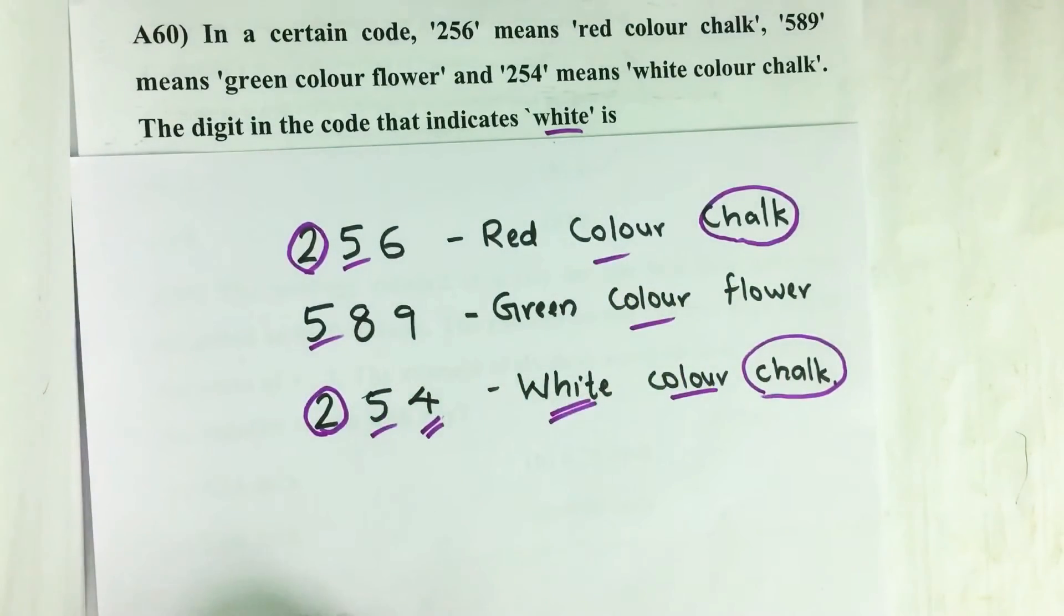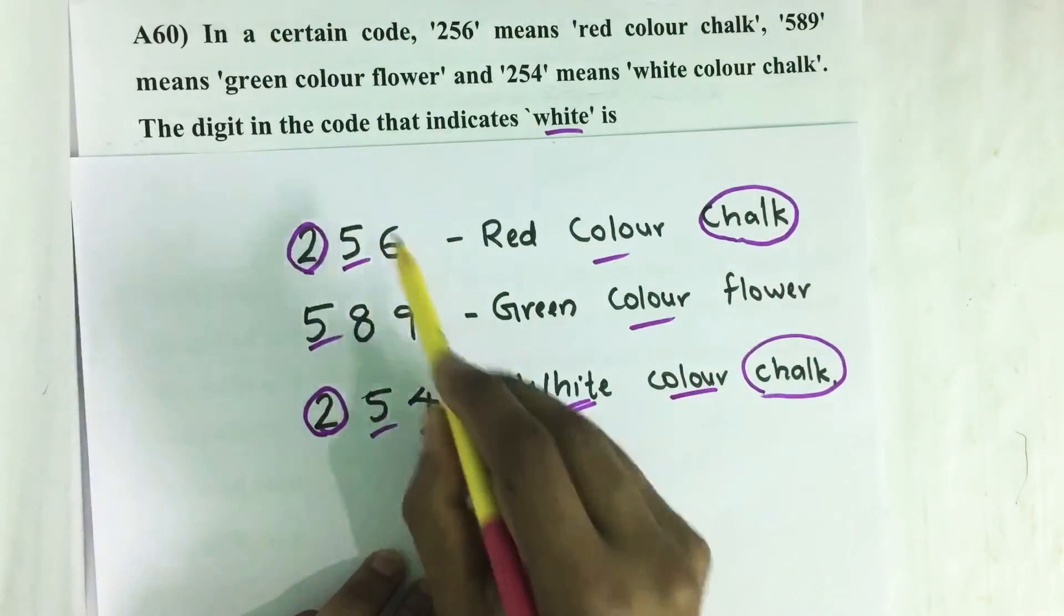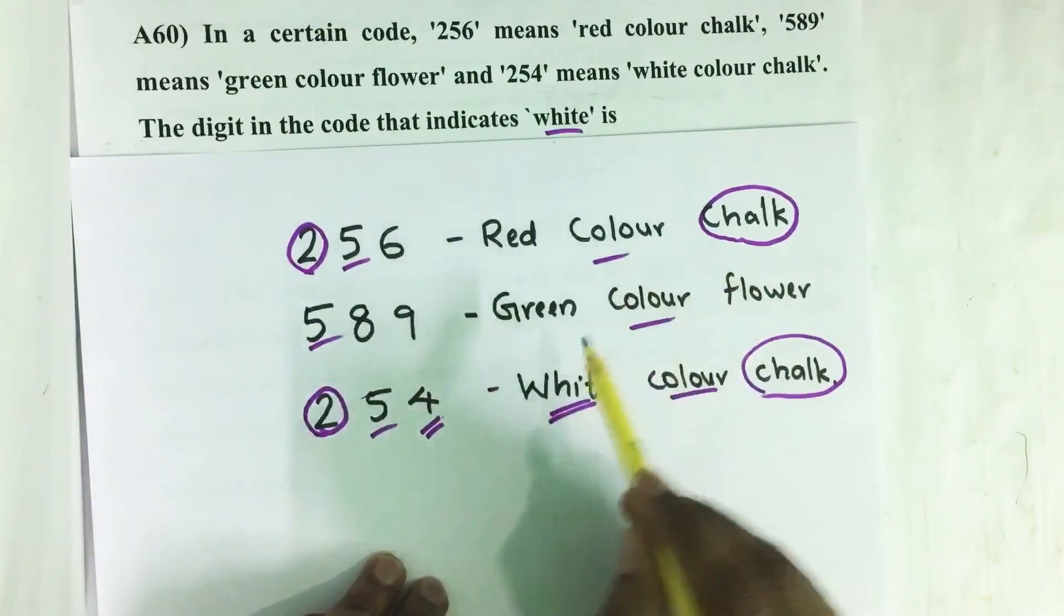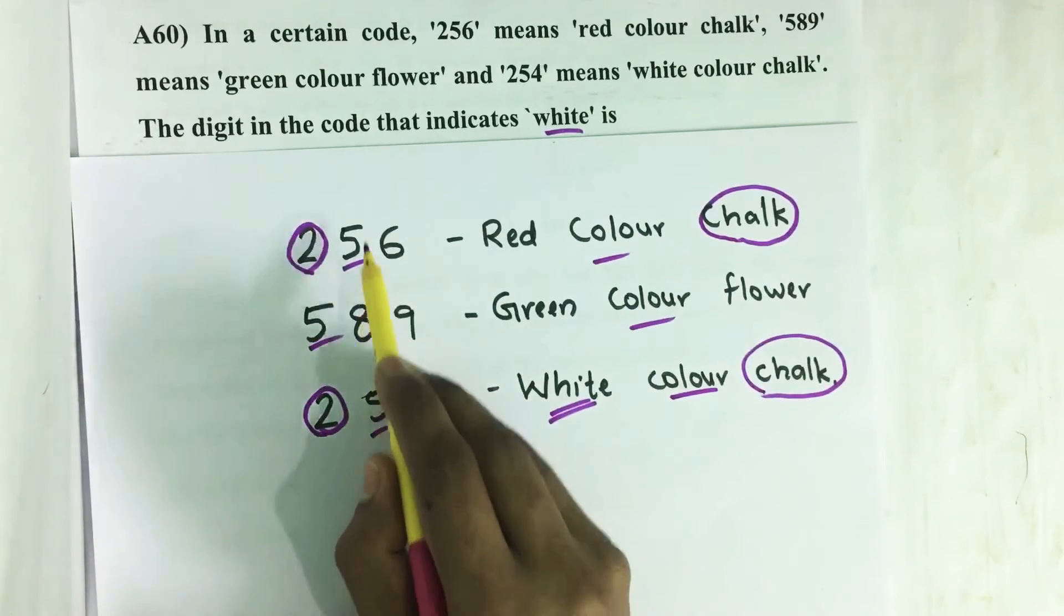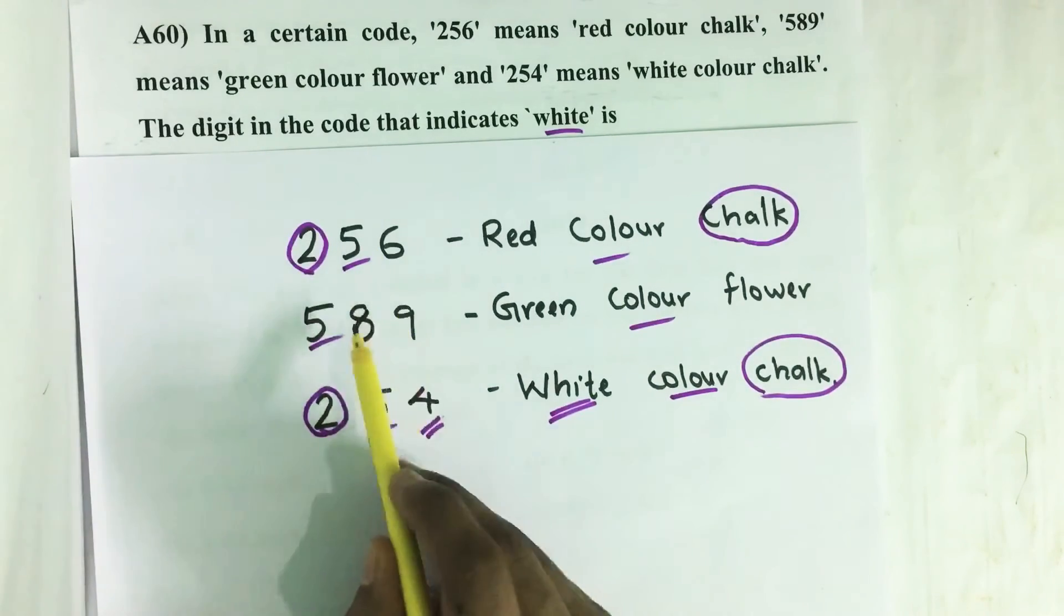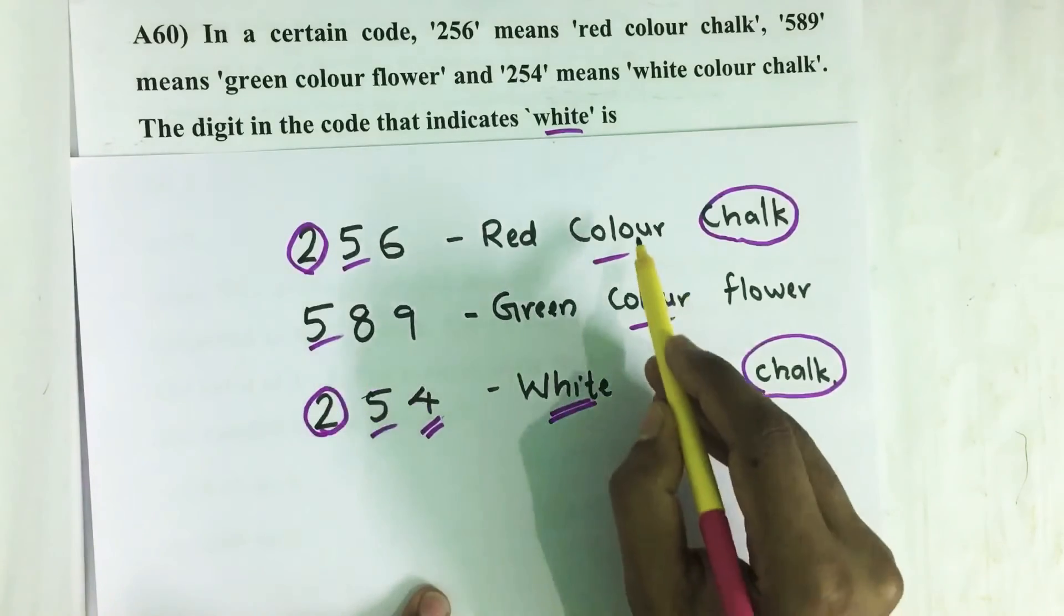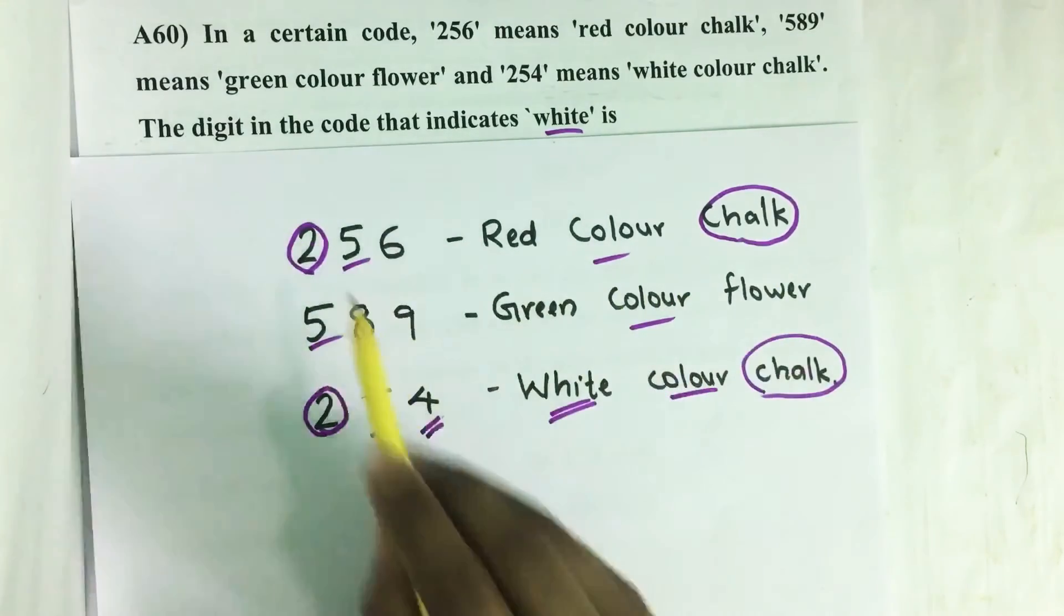And when we see the codes corresponding to these sentences, we can see in each of these codes 5 is common. That means 'color' is coded with 5.